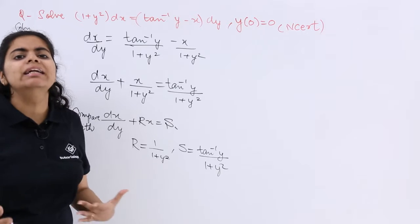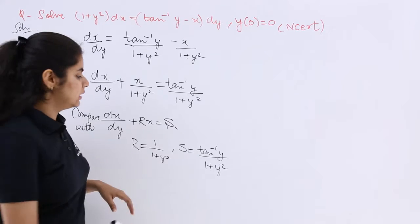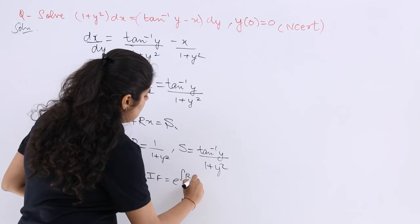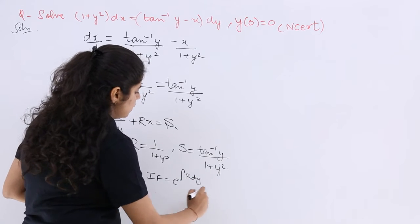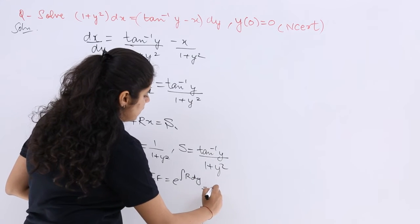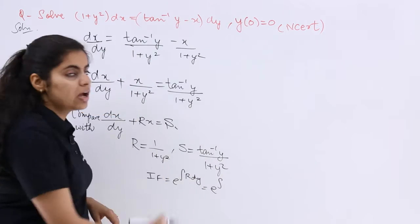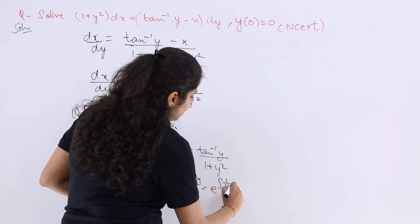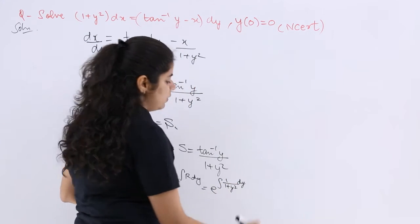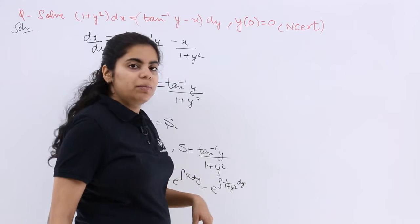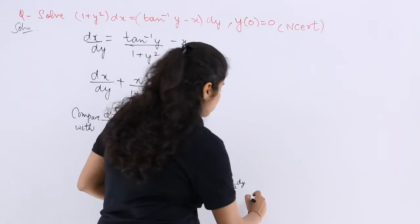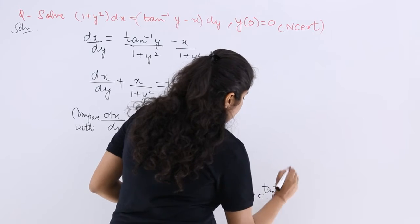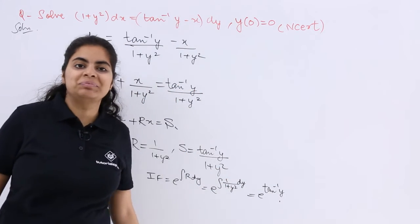Now you have to find the integrating factor. The integrating factor is e raised to the power ∫R dy. So that is e raised to the power ∫1/(1 + y²) dy. The integration of 1/(1 + y²) is tan⁻¹y. So e^(tan⁻¹y) is your integrating factor.